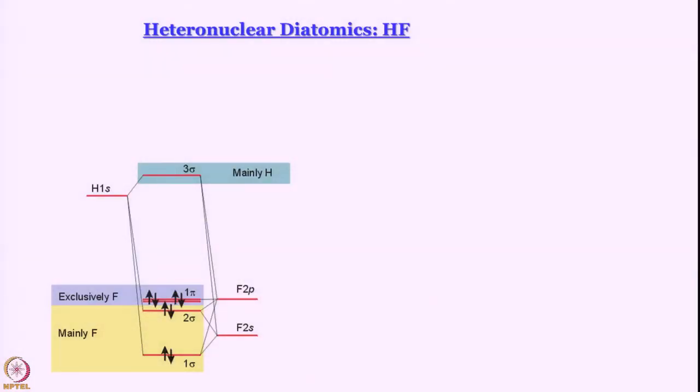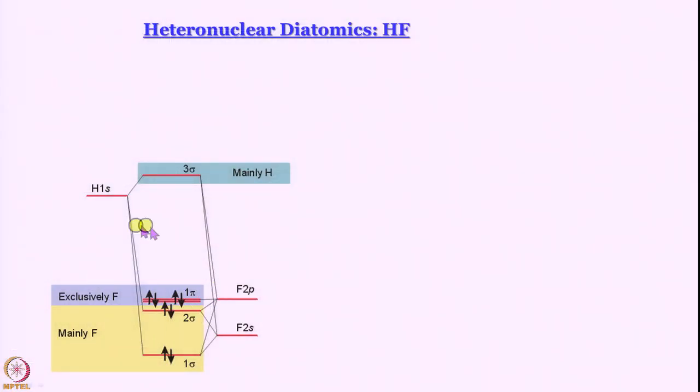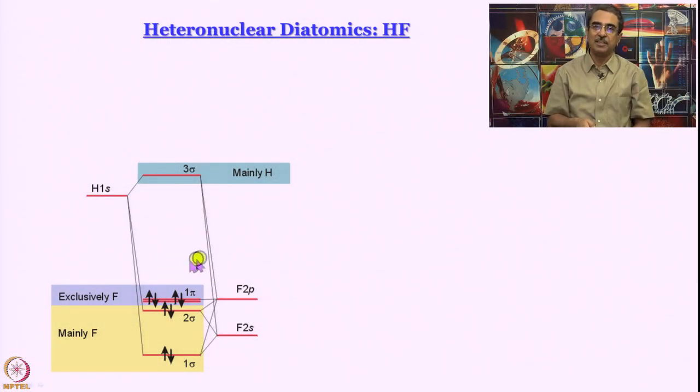These are called non-bonding orbitals and they stay on fluorine. So, if you go back to that Lewis electron dot structure, you will remember that there are lone pairs on fluorine. The only additional thing we are saying here is that these lone pairs reside in px and py orbitals which are collectively now called the 1pi orbital. But remember 1pi orbital here is actually non-bonding and localized on fluorine.